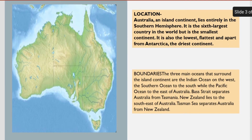Next, location of Australia. Australia is an island continent which lies entirely in the southern hemisphere. It is the 6th largest continent in the world but also the smallest continent. It is also the lowest, flattest, and apart from Antarctica, the driest continent.